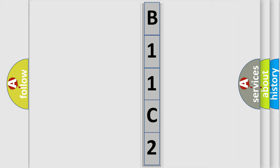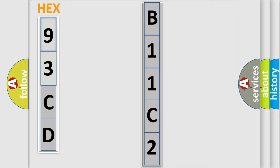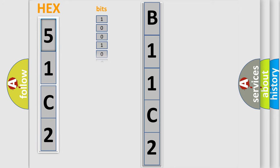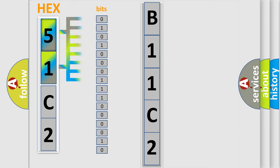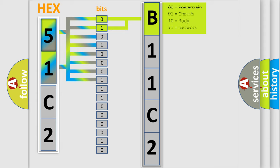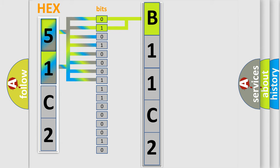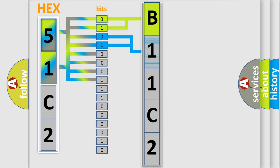The next two bits determine the second character. The last bits of the first byte define the third character of the code. The second byte is composed of a combination of eight bits. The first four bits determine the fourth character of the code, and the combination of the last four bits defines the fifth character.